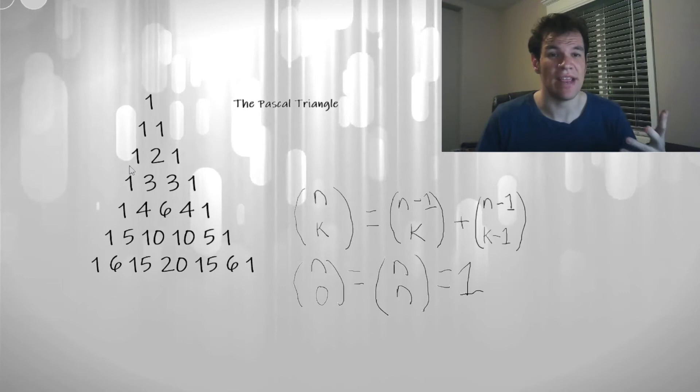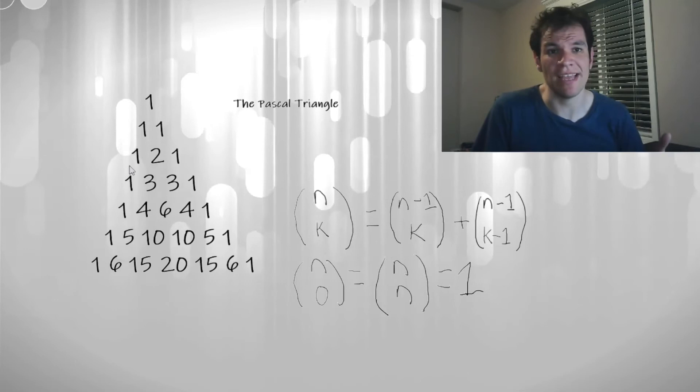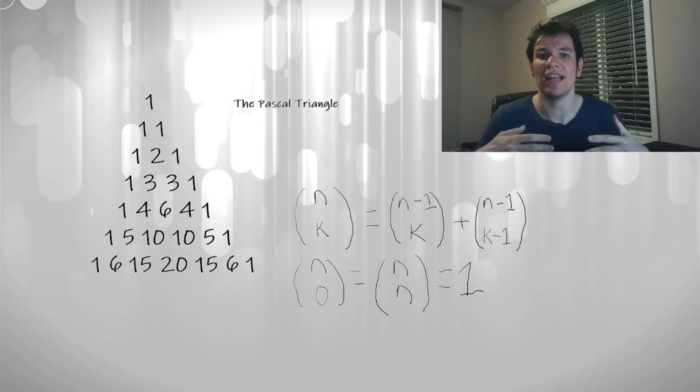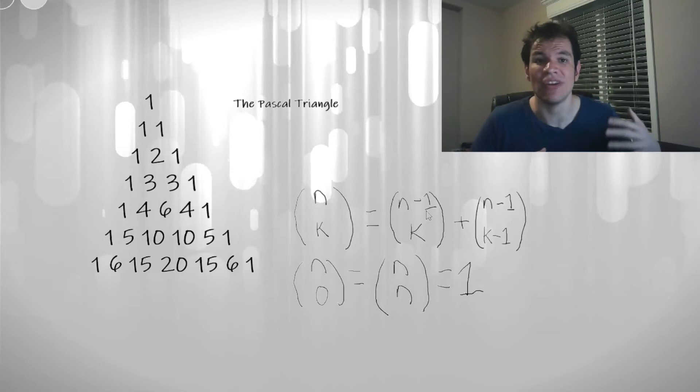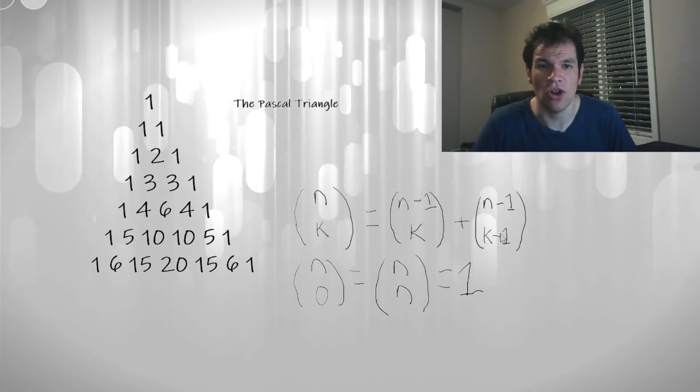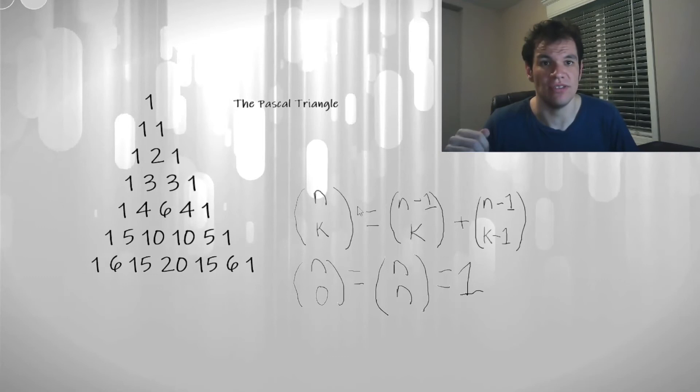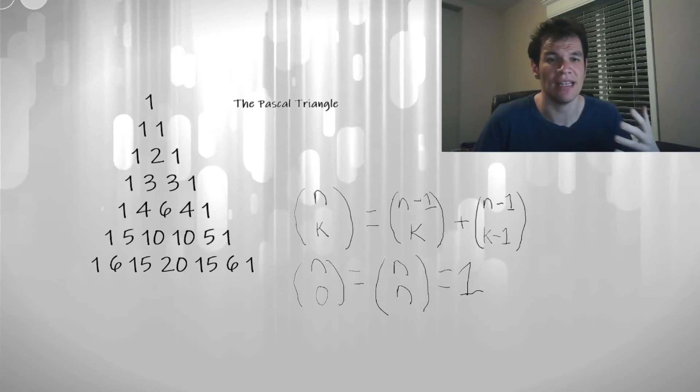How could we compute the Pascal triangle iteratively? Are you able to tell how? Just remember, the right side of the equation is at lower indexes than the left side of the equation. Feel free to pause the video if you need to think about it.